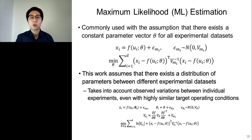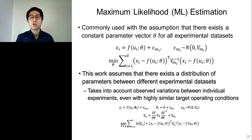In this case, the model equation for the system is expressed as given equations, and the maximum likelihood estimation is formulated as a minimization problem. However, in this work, parameters were estimated assuming that there exists a distribution of parameters between different experimental data sets. This was to describe the variations observed between individual experiments, even with highly similar target operating conditions with controlled temperature, pH, and dissolved oxygen. In this case, the model equation is expressed with constant parameters for each experimental data set, which have distributions. Then, the variance for the states can be approximately described by a function of parameter distribution, sensitivity, and measurement noise. Finally, the maximum likelihood estimation is formulated as a minimization problem optimizing with respect to both mean and variance of the parameters.